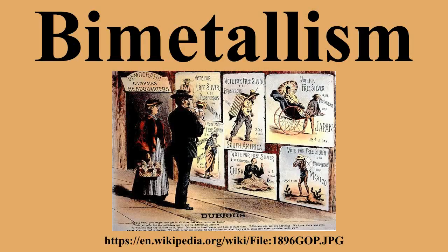An 1803 French law granted anyone who brought gold or silver to its mint the right to have it coined at a nominal charge over the official rate of 5 grams of 0.9 fine silver per franc, or 3,100 francs per kilogram of 0.9 fine gold. This effectively established a biometallic standard at the rate which had been used for French coinage since 1785, i.e., a relative valuation of gold to silver of 15.5 to 1. This rate was still close to the market rate in 1803, but for most of the next half century the market rate was above 15.5 to 1.